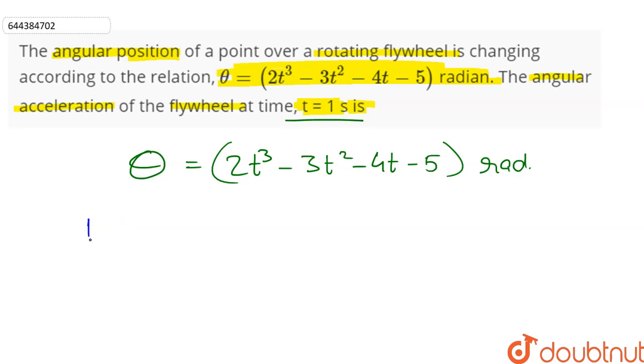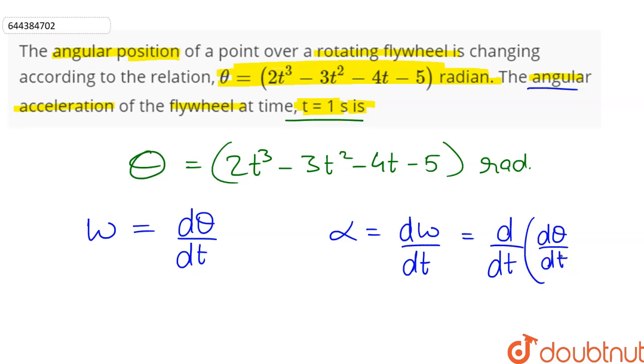Now the angular velocity denoted as omega is given by the formula d theta by dt, and the angular acceleration denoted as alpha is equal to d omega by dt, or it can be written as d by dt of d theta by dt because omega is d theta by dt.